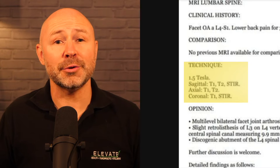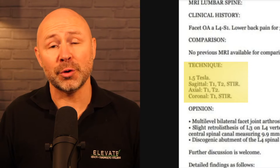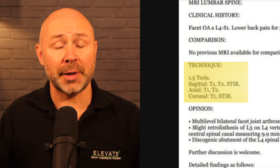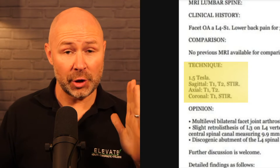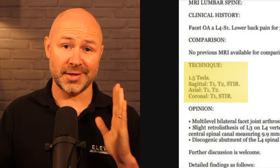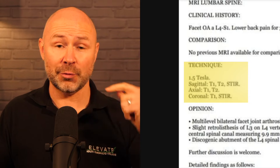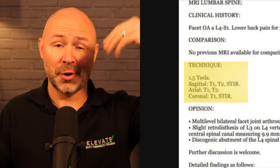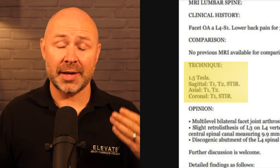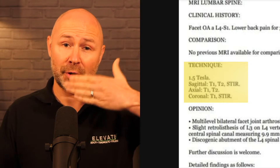The MRI scanner used was a 1.5 Tesla — a 1.5T — and these are very good quality machines. Sagittal is where the picture is taken from the side and you go through the body from left to right or right to left. Axial is where you take slices from top to bottom, as if we're looking down through the top of the head into the body. Coronal is slicing or taking image slices from the front to the back.